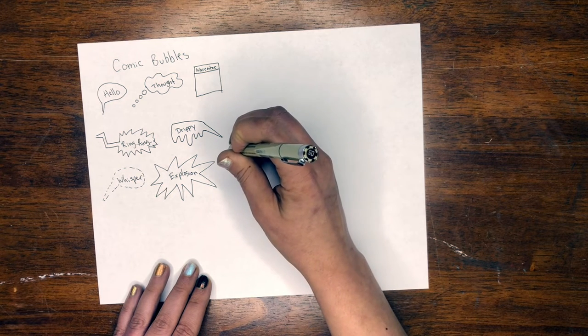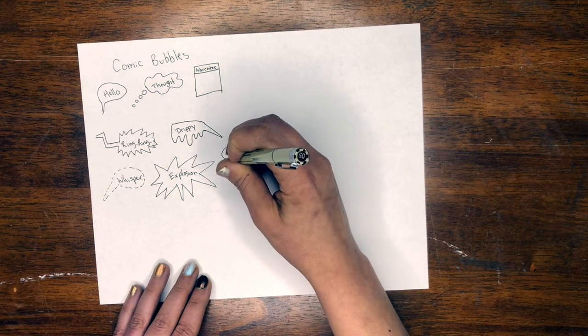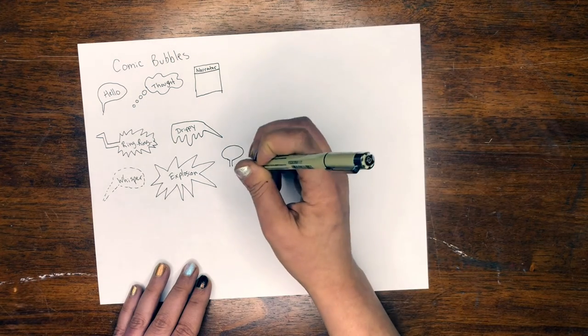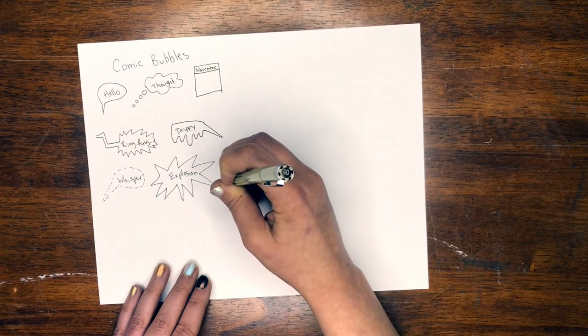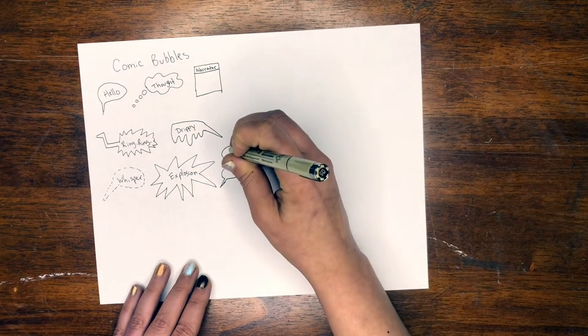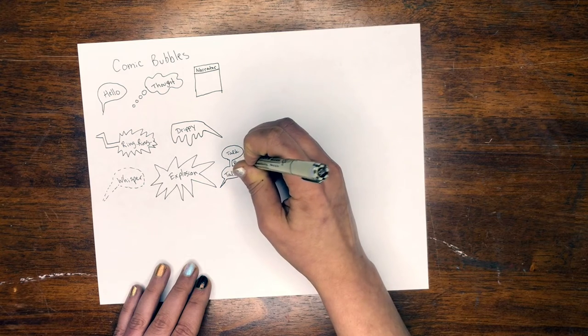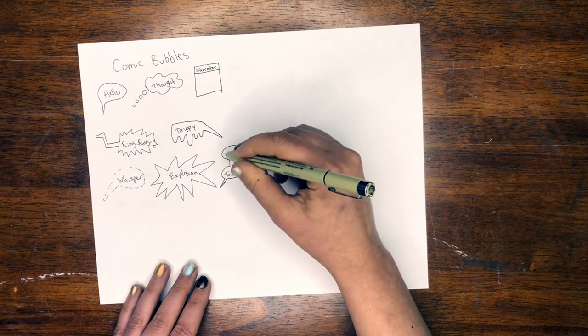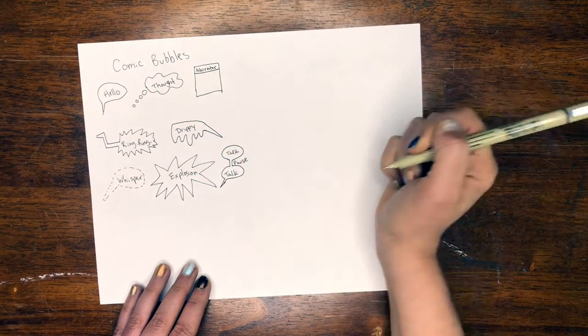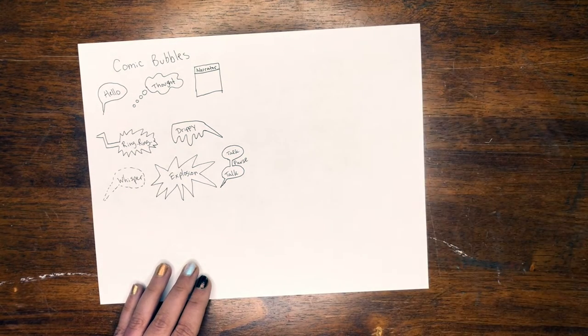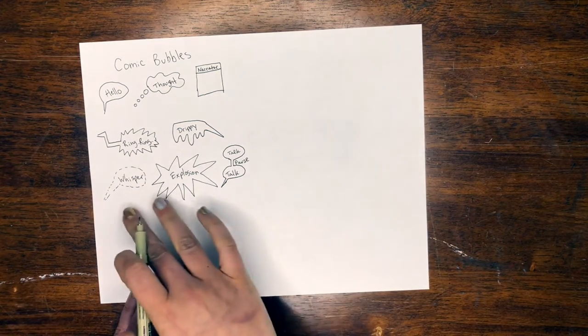And then our last one is a bubble connected to another bubble. So we would have your first bubble, a line, and then our second bubble connecting to whoever's saying it. So this would be talking, talking, but this is a pause because when the reader is reading it, they might read like, hi, my name is, pause, Miss Choate. So it helps you have the reader have a pause in their reading of your comic. So that's our first tip, doing different bubbles throughout your comic. It will help to make your comic more interesting.